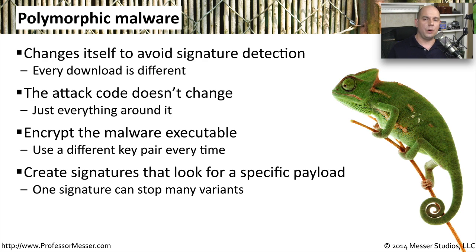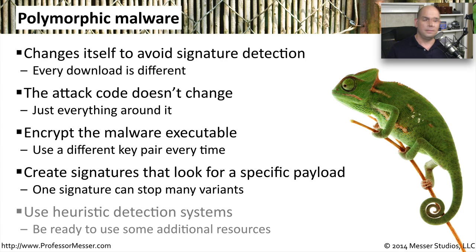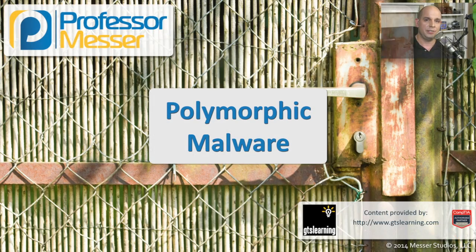With polymorphic malware, there's still going to be part of the executable that is exactly the same. Signature detection engines take advantage of this by trying to find exactly the piece of that malware that is the same regardless of what changes around it. In this way, we're able to create a single signature that can identify many variants of exactly the same malware. Ultimately, the only way to identify some polymorphic malware is through heuristics — but that's difficult to apply on a very wide scale and uses more resources inside our systems.